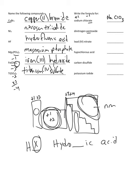Dinitrogen pentoxide: we see prefixes, so the prefixes tell me the subscripts — two nitrogens and five oxygens, giving N2O5.